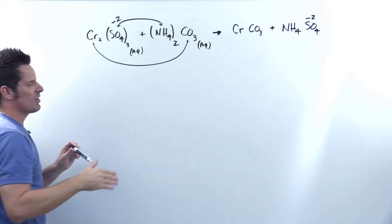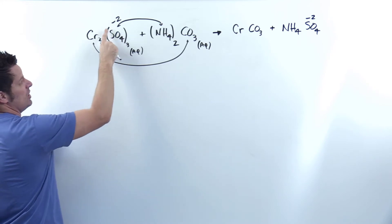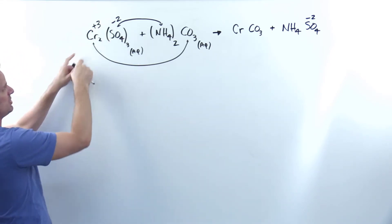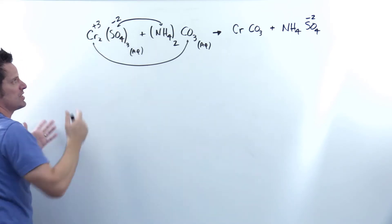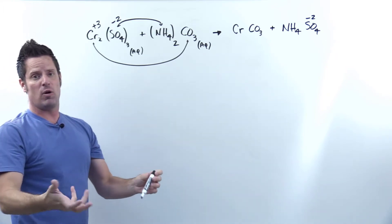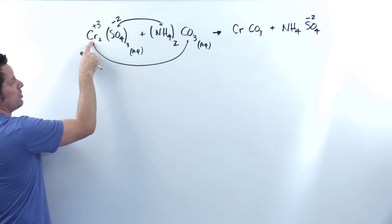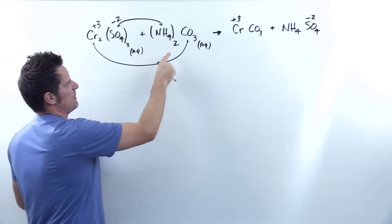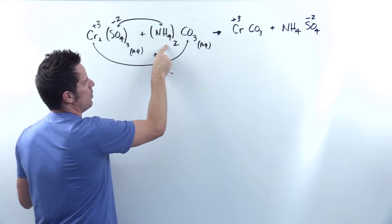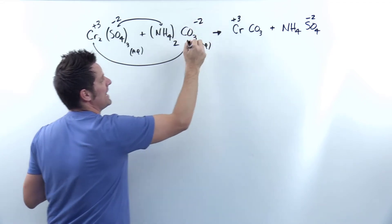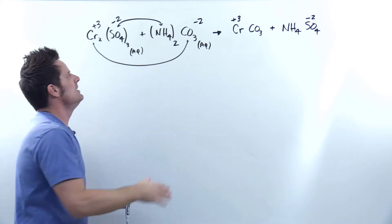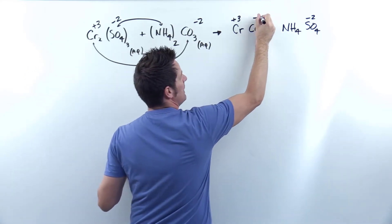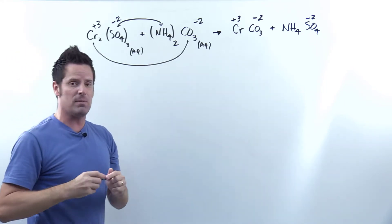From an earlier video: the subscript tied to the thing on the right is actually the charge for the thing on the left. So the 3 subscript brings up a +3 charge for chromium, and the 2 subscript brings up a −2 charge for sulfate. Similarly, over on the right compound, the 2 subscript tied to ammonium gives a −2 charge for carbonate — which you should memorize anyway. For NH4, the subscript next to carbonate is an implied 1, so NH4 carries a +1 charge. NH4 is a polyatomic ion you must memorize.